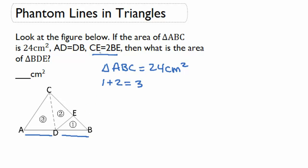If CE has the same height as BE and twice the base, that means that CE is twice as big a triangle as BE.